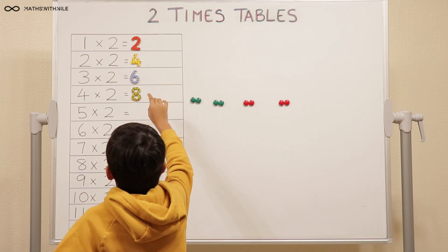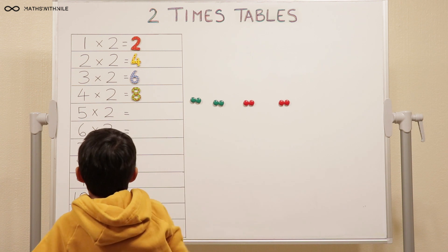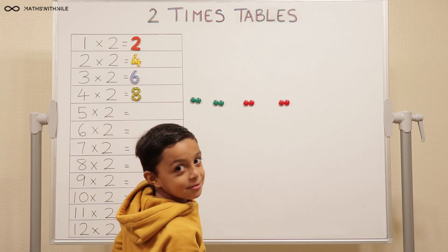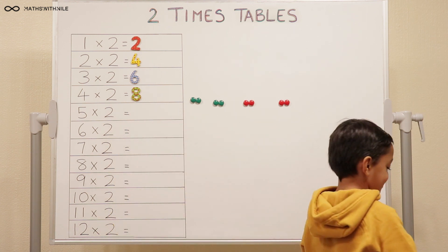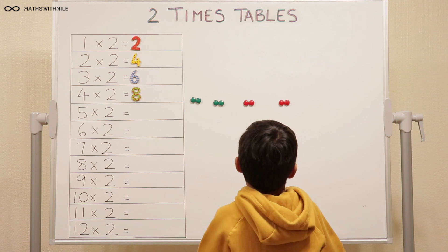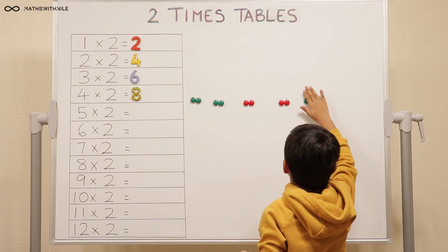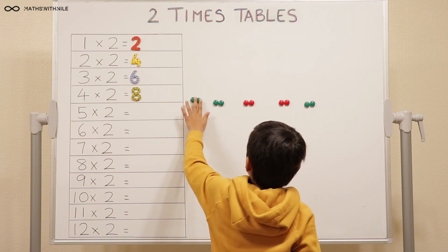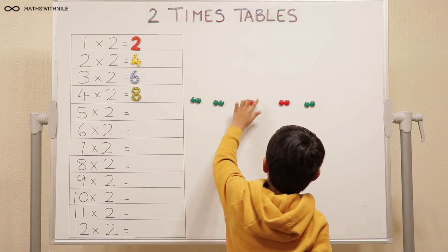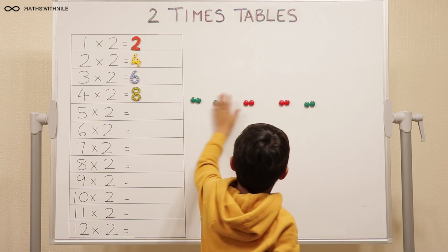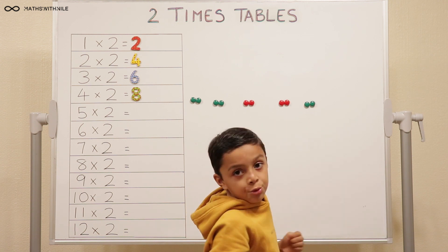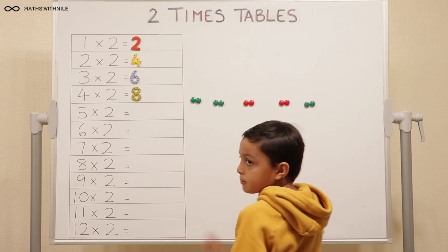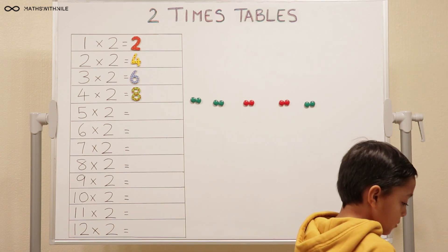Our next question is five times two. Really, we can just count on two more to eight. Let's still show it on the board, so each step we're explaining what we're doing. We've got another group of two. One, two, three, four, five, six, seven, eight, nine, ten. This is five groups of two. Now count in twos to make it easier: two, four, six, eight, ten. Very good. So five times two equals ten.